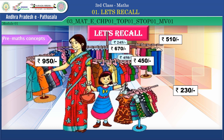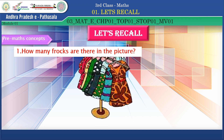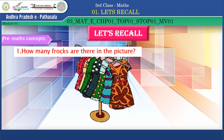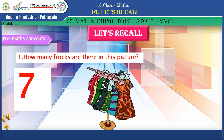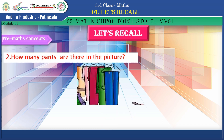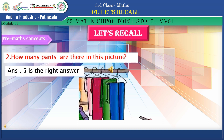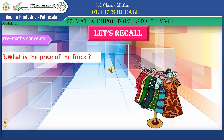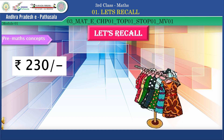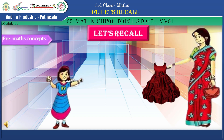Are you ready for a few questions? Question number one: how many frocks are there in the picture? Count and say. Yes, seven — seven is the right answer, very good! Second question: how many pants are there in the picture? Yes, five is the right answer, well done! Third question: what is the price of the frock? Yes, 230 rupees is the right answer, well done!